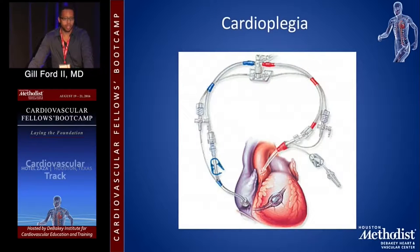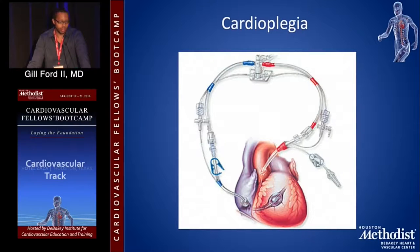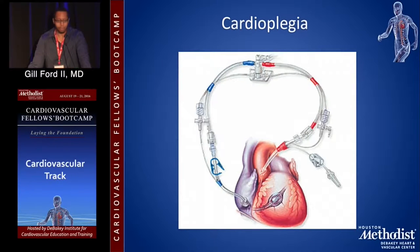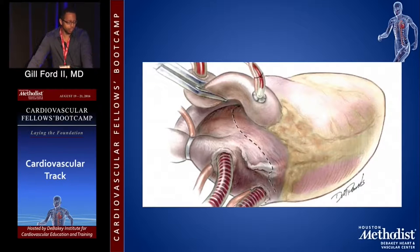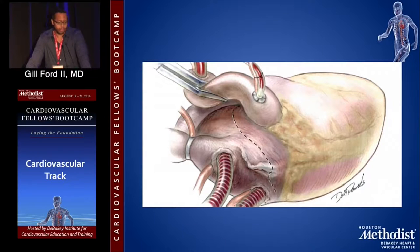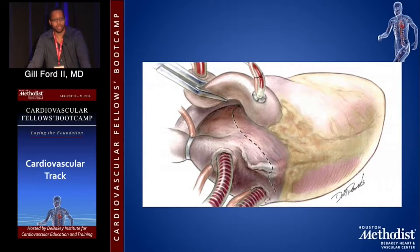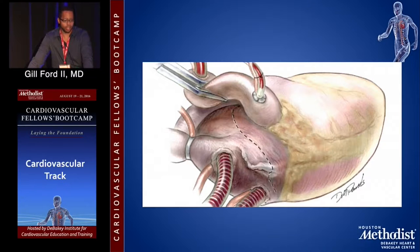For cardioplegia, there are usually two delivery methods. Antegrade cardioplegia goes down the coronary arteries, while retrograde is delivered backwards through the coronary sinus. The balloon you see inflated in the heart is the retrograde cardioplegia cannula — the balloon is inflated to prevent the solution from flowing backwards. Below the cross clamp, a needle inserted into the ascending aorta is where antegrade cardioplegia is typically delivered. If the aorta is opened, you can deliver it directly using ostial cannulas. Antegrade protects the whole heart better than retrograde, which doesn't protect the right heart as well because not all blood empties through the coronary sinus.